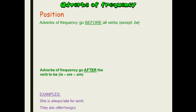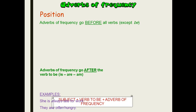It's before the main verb, after verb to be. They are often hungry. 'Often' — 'are' is verb to be, so it comes after verb to be.